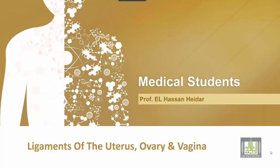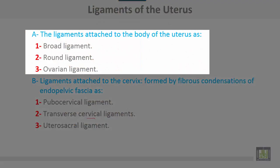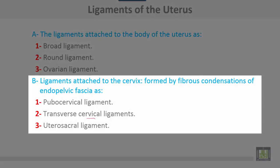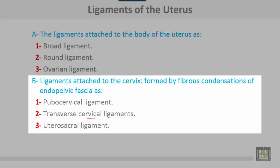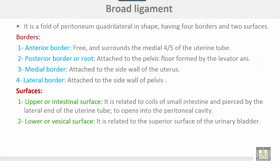The ligaments attached to the uterus: three ligaments attached to the body — broad ligament, round ligament, and ovarian ligament. The ligaments attached to the cervix are formed by fibrous condensations of the endopelvic fascia: pubocervical ligament, transverse cervical ligaments, and utero-sacral ligaments.